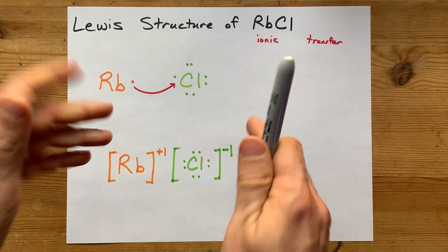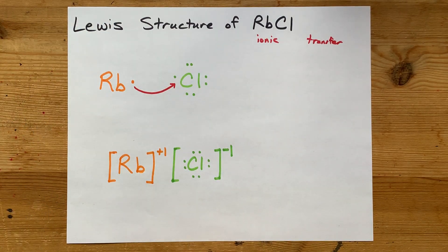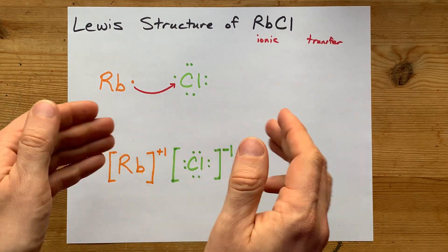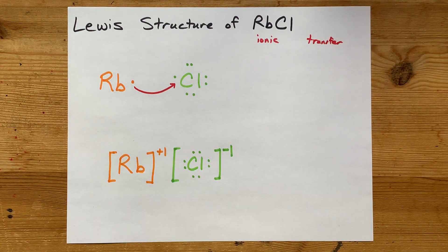This is the Lewis structure for rubidium chloride. This is just me showing you how it happens. This is what you came for. That's what I'm talking about. Welcome to the party, and best of luck.